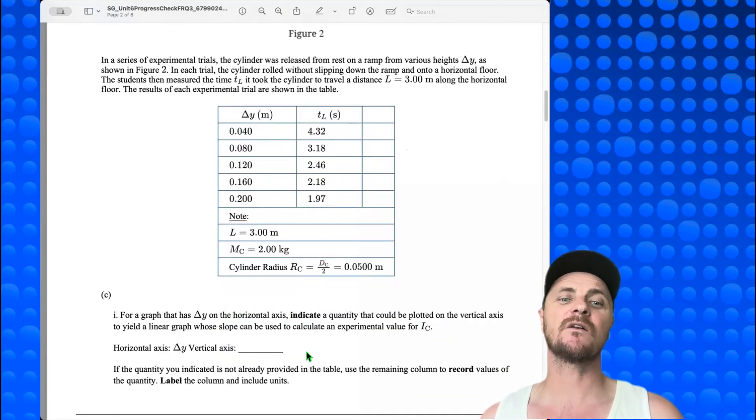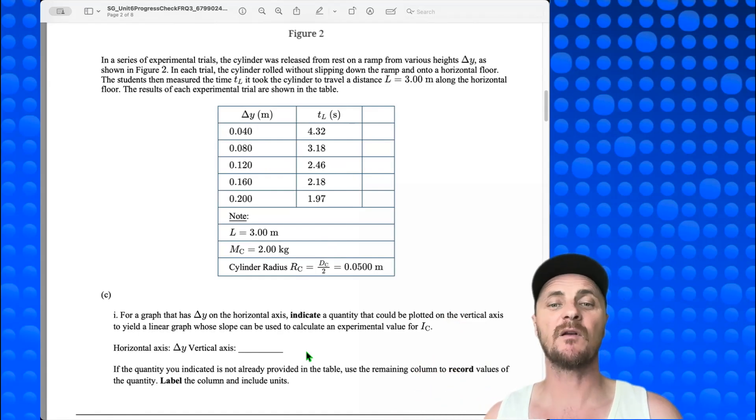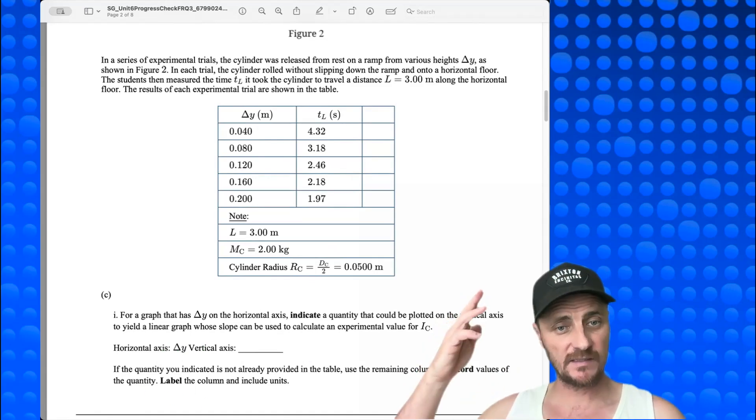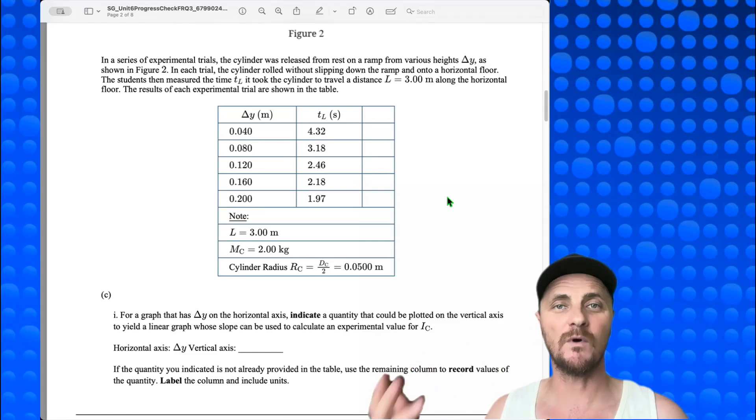It's giving us some reminders. We know that the cylinder radius would be half of the diameter. Awesome. So for a graph that has delta y on the horizontal axis indicate a quantity that could be plotted on the vertical axis to yield a linear graph whose slope can be used to calculate an experimental value for IC, the rotational inertia of the cylinder. So the horizontal axis is covered. They're telling us to put delta y on the x-axis. What are we going to put on the y-axis? And remember, if the quantity we indicate that's going to go on the vertical axis is not already provided in the table, we need to use this remaining column to record values of the quantity, label the columns, and include units. So let's go over to the paper, and we're going to brainstorm a little bit. We're going to develop a conservation of mechanical energy equation, and from that we're going to know what to put on our graph.